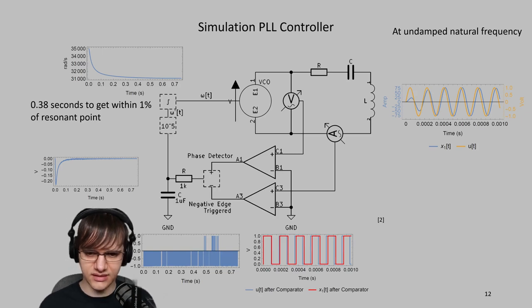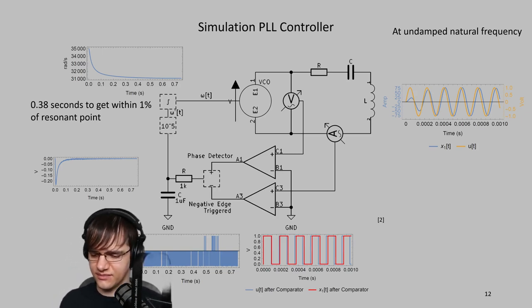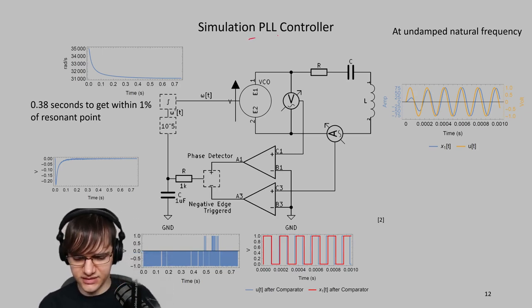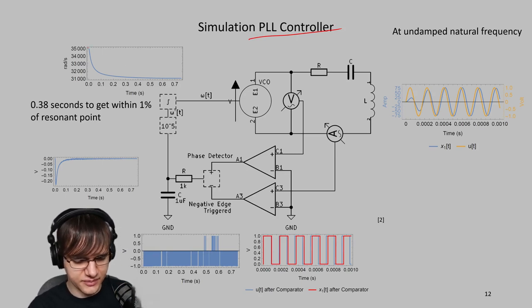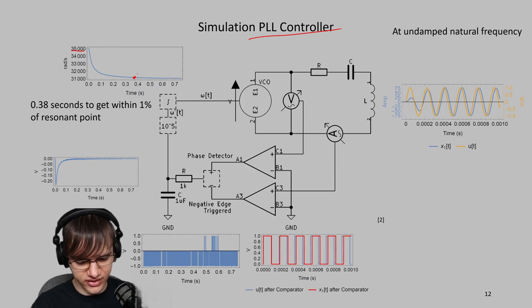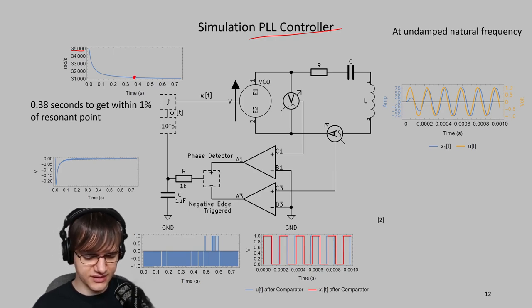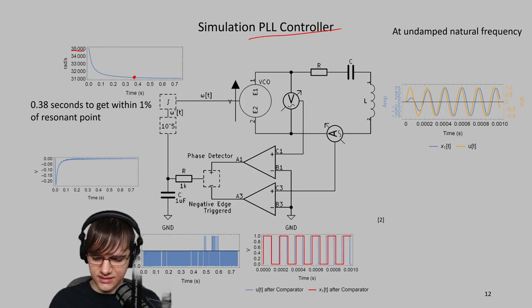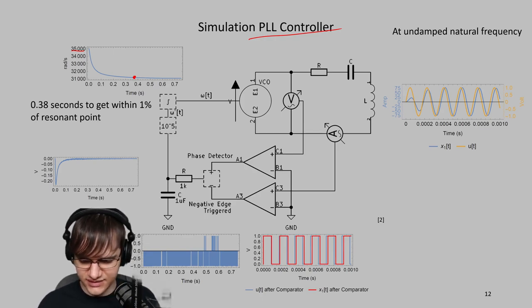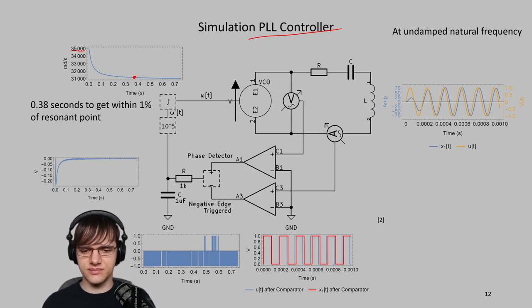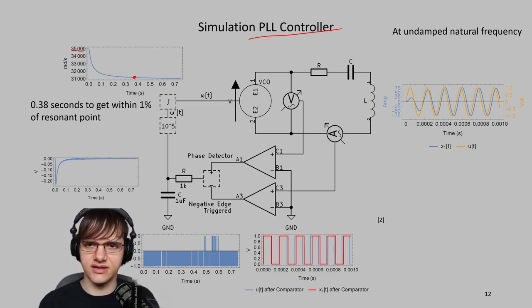Comparing this with a PLL controller, the downside of PLL controllers is that you're going to get a time-to-resonance based on your initial condition. For my controller that I simulated, it was around 0.38 seconds, which is around right there, to get within 1% of the resonant point, instead of having the resonance almost like right at the start of the controller. So it's a superior controller to a PLL controller.